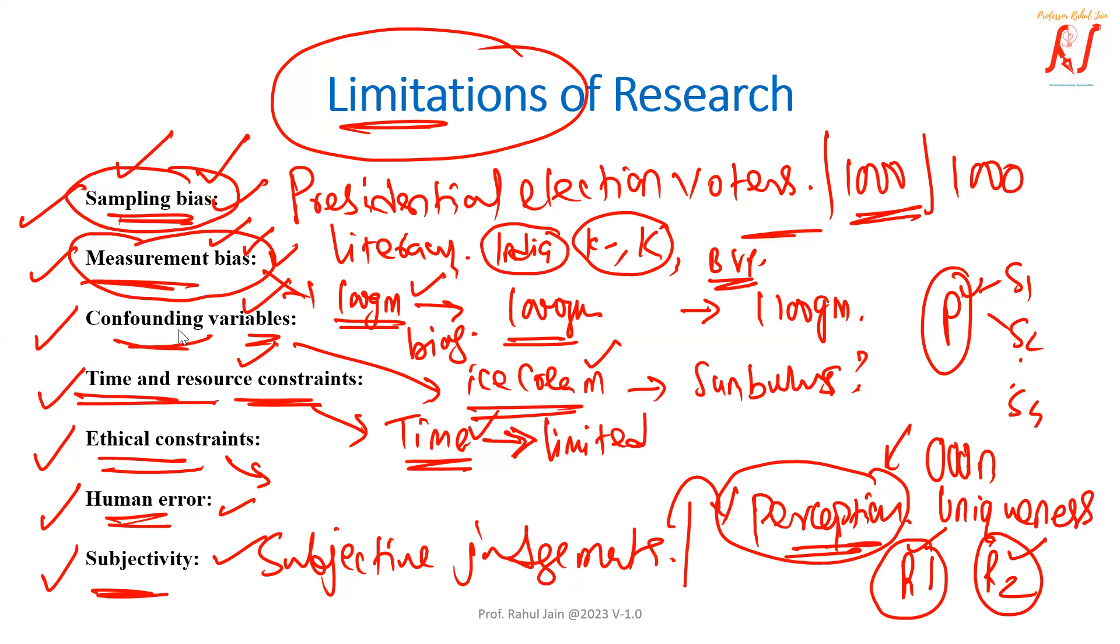There might be some probabilistic coincidences between the variables. So it does not need that the variables are depending on each other. That is called confounding variables that also create the limitations. Time and resource constraints are also a limitation, ethical constraints and human error definitely lead some limitations in the research and subjectivity.